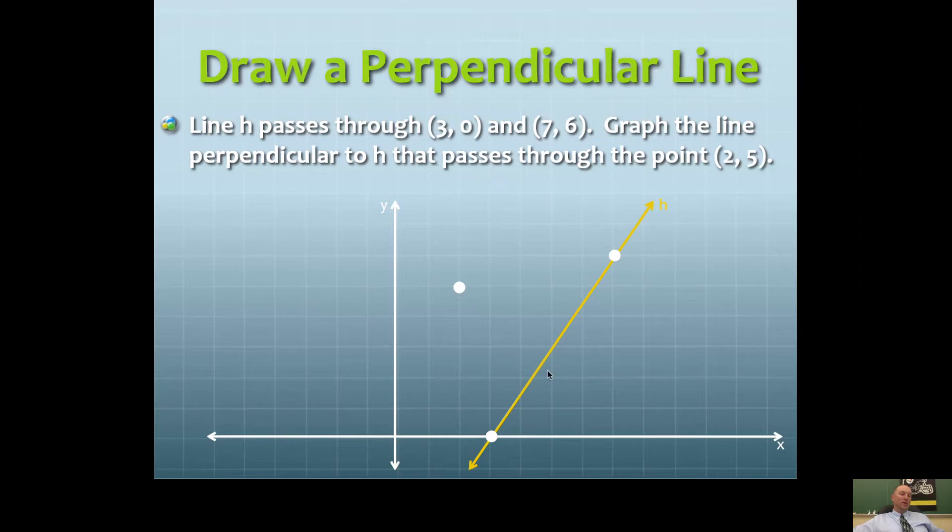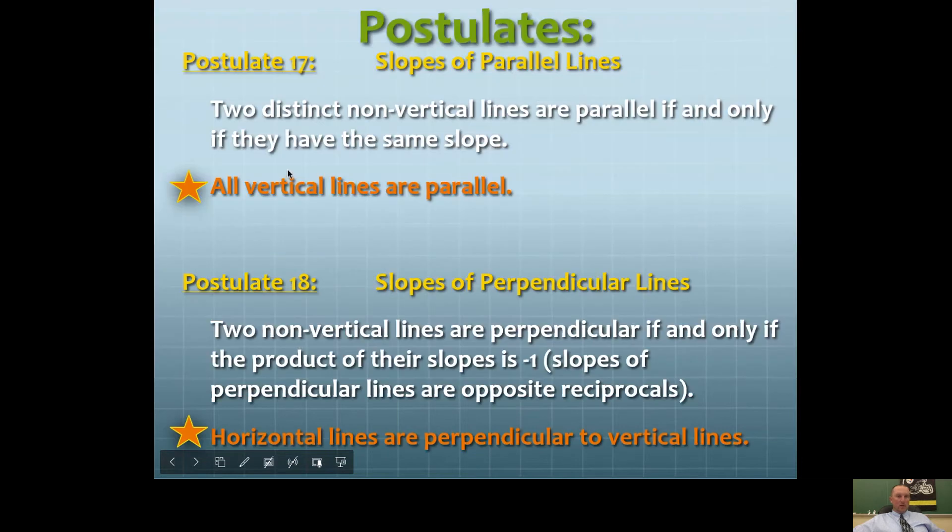Now we need to draw the one and only line that's perpendicular to this, and we're going to do this by using the information in the new postulates that we just talked about.